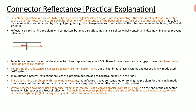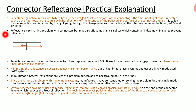Connector reflectance, also called optical return loss or back reflection, is the amount of light reflected back into the fiber toward the source by reflections at the interface of the polished end surface, the connector, and air. This is called Fresnel reflection, caused by light passing through the change in index from the refractive index of the fiber (1.5) to air (equal to 1). Reflectance is primarily a problem with connectors but may also affect mechanical splices, which use an index matching gel to prevent reflectance.